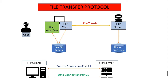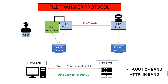FTP uses a separate control connection, and for this reason FTP is said to send its control information out of band. HTTP sends request and response header lines into the same TCP connection, so HTTP is said to send its control information in band. When a user starts an FTP session with a remote host, the client side of FTP initiates a control TCP connection with the server side on server port number 21.